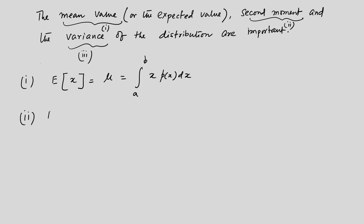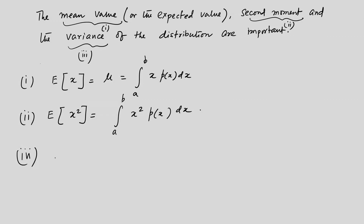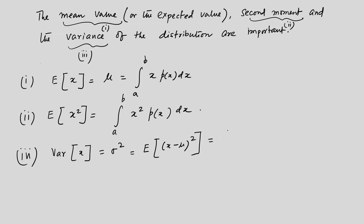Similarly, the second moment is equal to the integral from a to b of x²·p(x) dx. The third quantity, called the variance, is written as Var(x), denoted by σ², and is defined as the integral from a to b of (x − μ)²·p(x) dx, where μ is the mean. This can be simplified as E(x²) − μ².